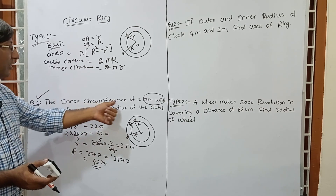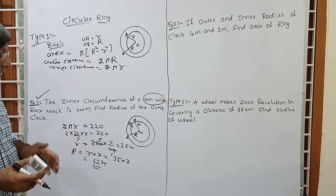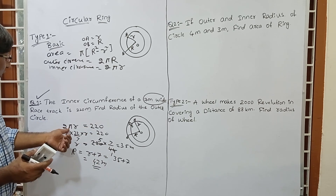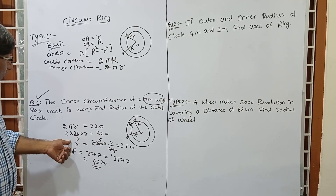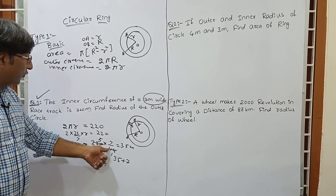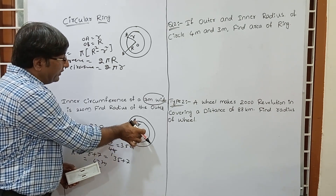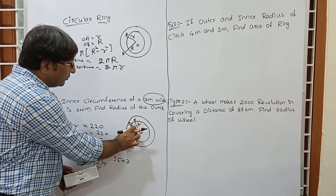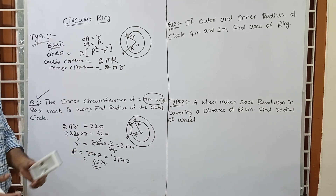The most important point in this question: inner circumference of a 7 metre wide race track is given as 2 pi r equals 220. So 2 into 22 by 7 into r equals 220, giving r equals 220 multiplied by 7 by 44, which gives 35 metres as inner radius. Then outer radius OB equals inner radius plus track width, so 35 plus 7 gives 42 metres.